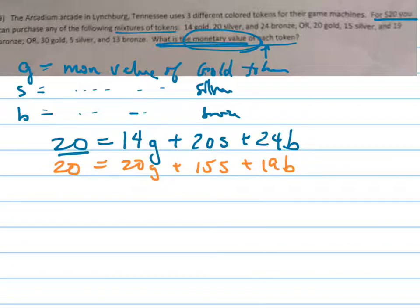Or, for $20, you can get 30, 5, and 13. So I've got three equations with three variables. And it doesn't look like it's too pretty either.